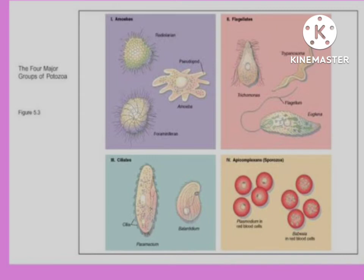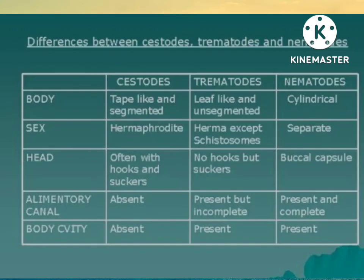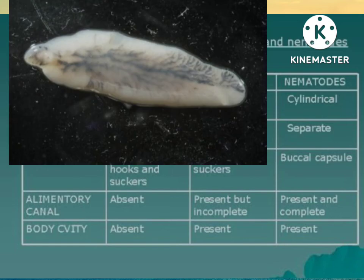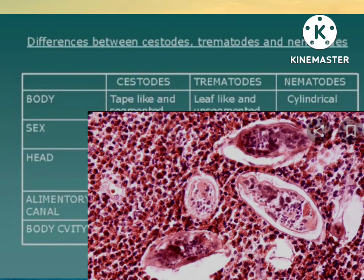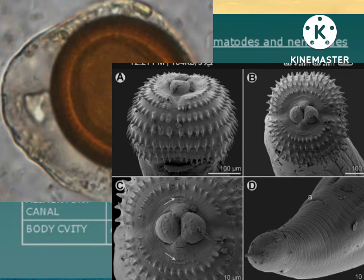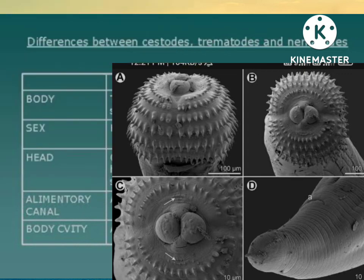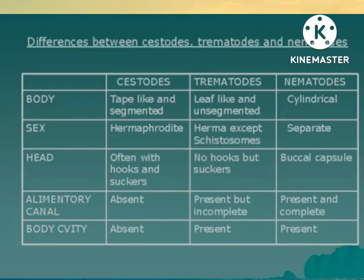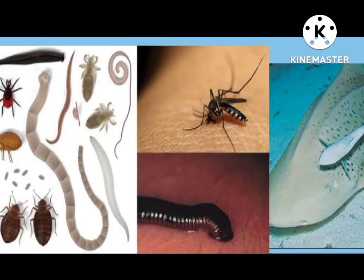In the multicellular Helminths, there are three groups: trematodes, cestodes, and nematodes. Examples of trematodes: Fasciola hepatica, Schistosoma hepatica. Examples of cestodes: Taenia sp., Echinococcus sp. Examples of nematodes: roundworms, hookworms, threadworms.